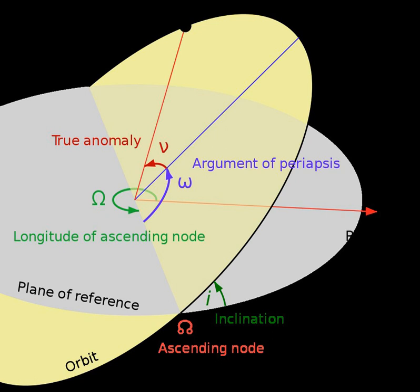Parametrically, omega is the angle from the body's ascending node to its periapsis, measured in the direction of motion.